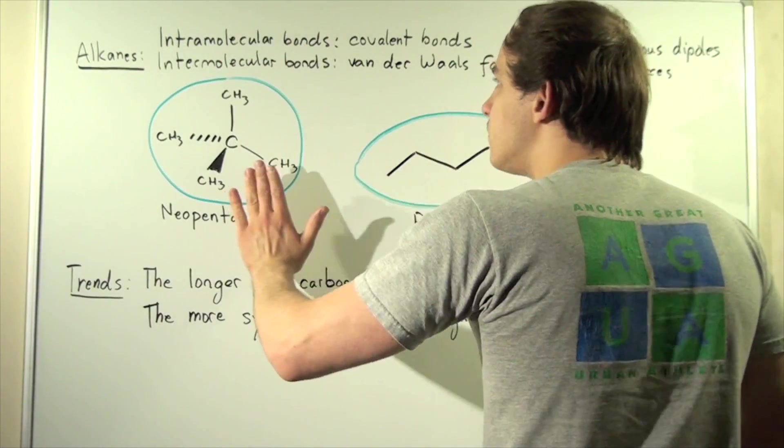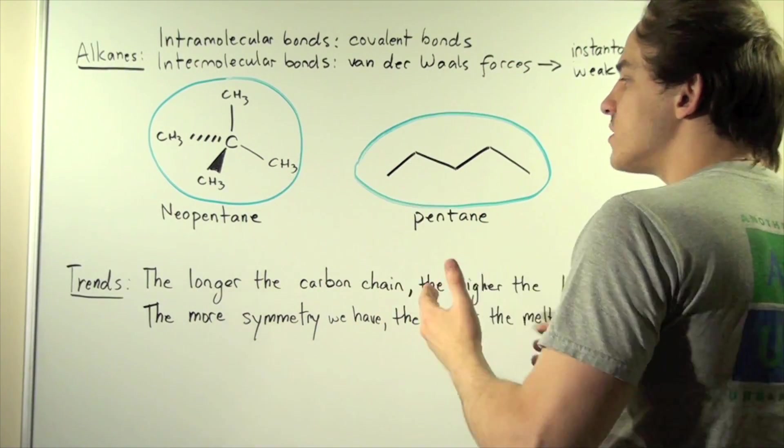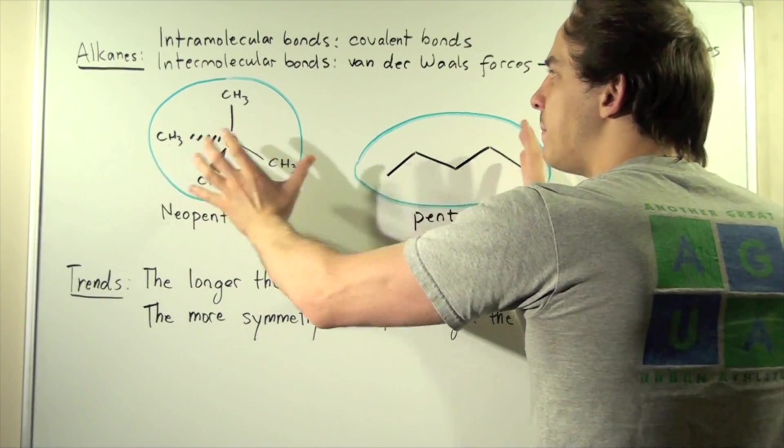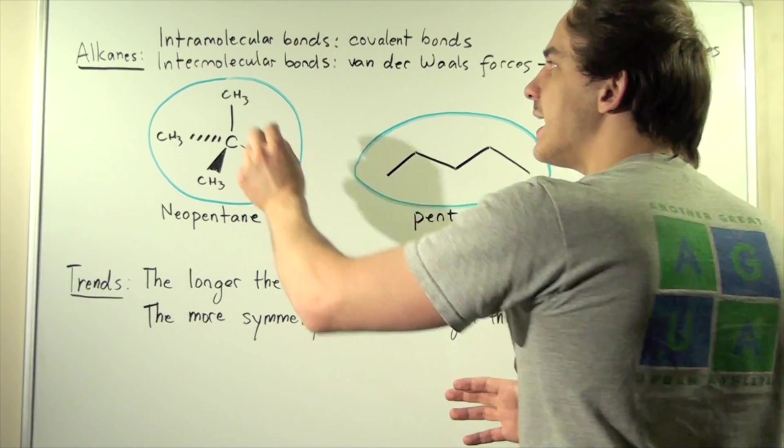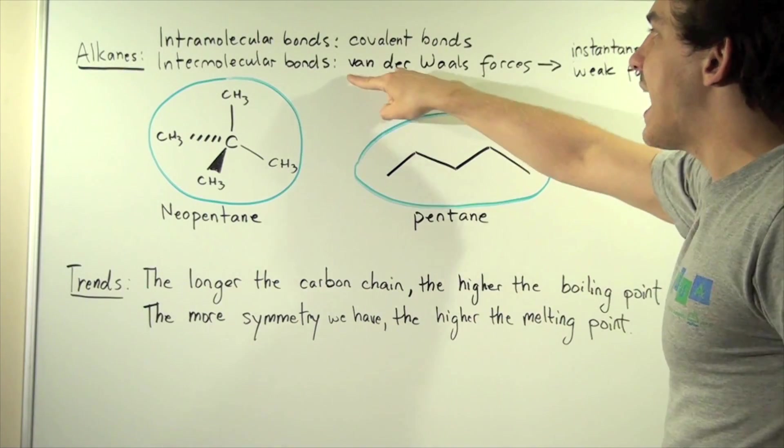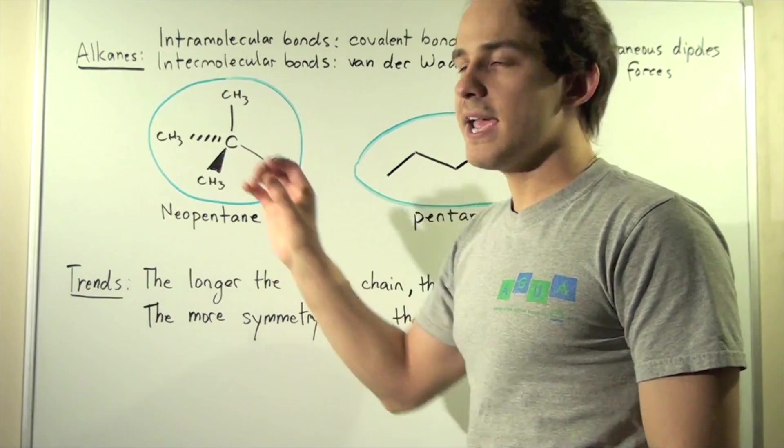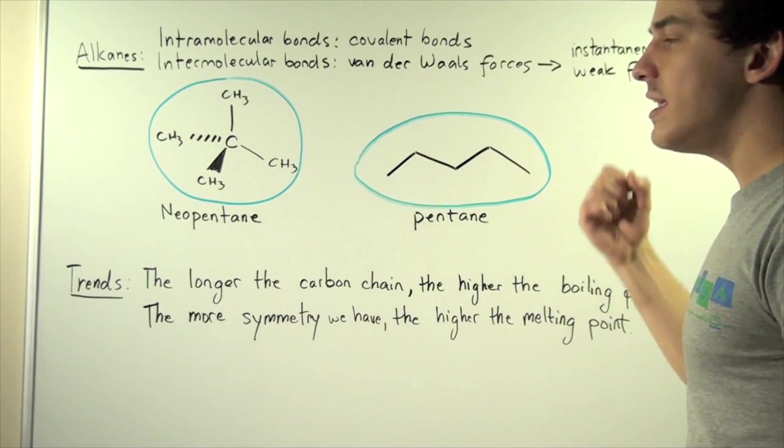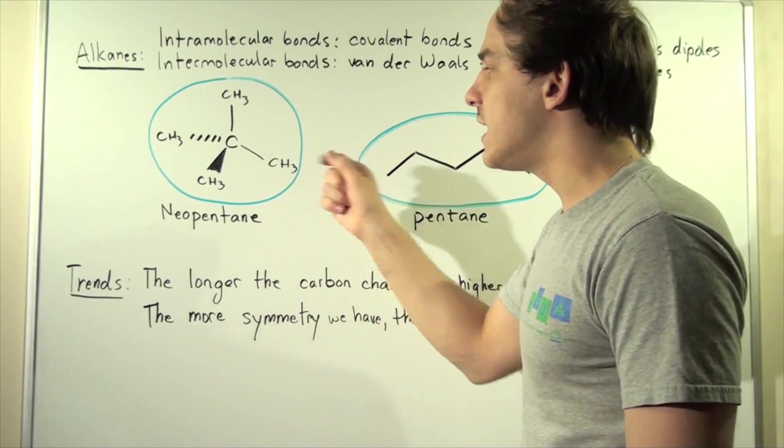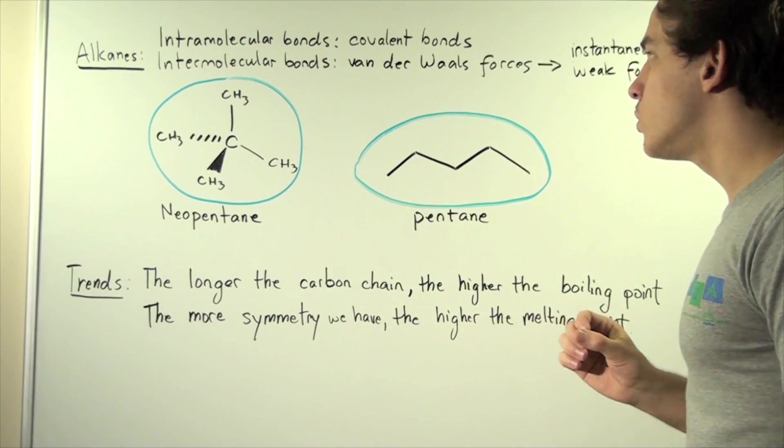So if this is all by itself, we have no intermolecular bonds. If we place this pentane or some other alkane next to our neopentane, these two compounds will attract one another via intermolecular bonds. And in this case, in the case of alkanes, we have van der Waals forces. So the intermolecular bonds of alkanes are van der Waals forces. And these are simply instantaneous dipoles created between the protons found in the nuclei and the electrons surrounding or orbiting those nuclei.